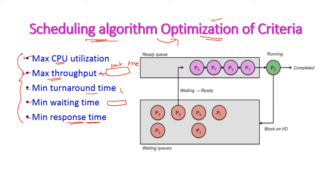When a process comes to the ready queue, it should be responded by the CPU within minimum waiting time. Hence, the CPU utilization will get increased and throughput will be maximized — that is, more number of processes will be executed per unit time. To complete a single process it will take very minimum turnaround time, minimum waiting time in the ready queue, and minimum response time, meaning very quickly the process should start executing. All these criteria should be satisfied while designing a CPU scheduling algorithm.